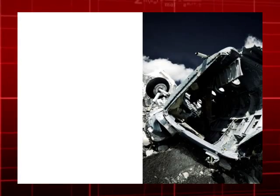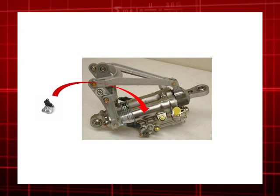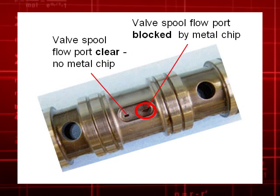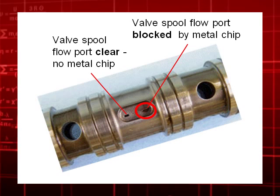Inspection of the wreckage shows some suspicious tiny metal chips in a hydraulic fluid valve. How can we establish that these chips could have caused the control system to fail and the aircraft to crash?